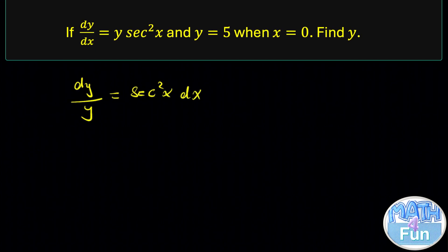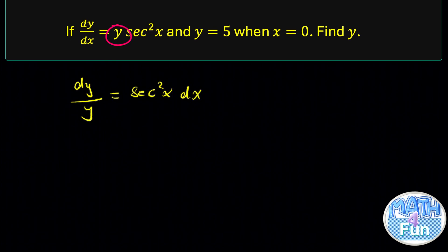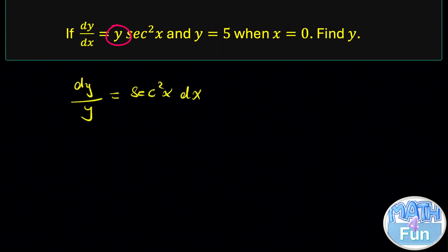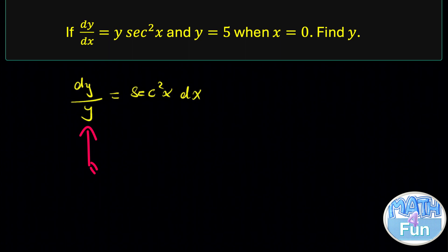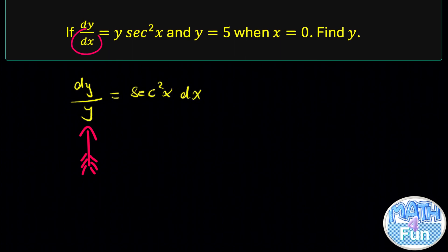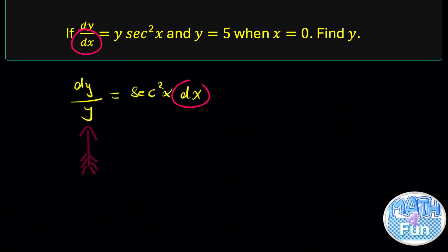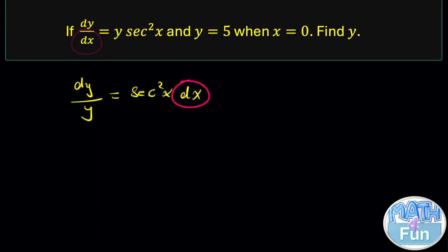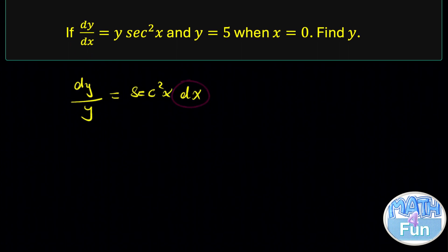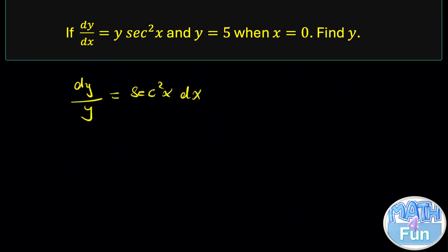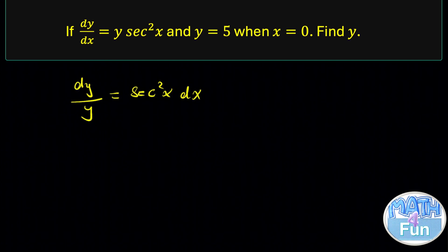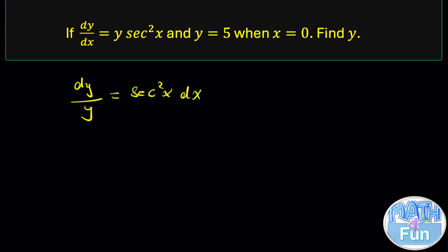You know how to do that process, right? Since y is on the top side, to get it to the other side of the equation, make it in the denominator. And dx is in the denominator, make it on the other side in the numerator. Like we multiply the whole equation by dx and divide by y on each side. This process is easy for you. So now, dy/y = sec²x dx.